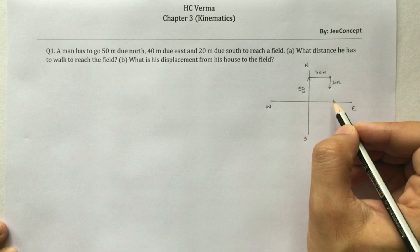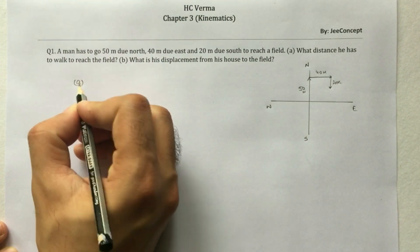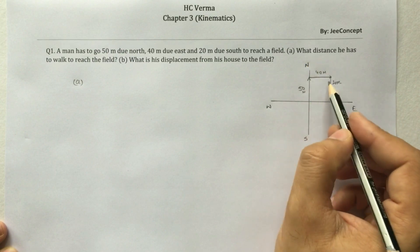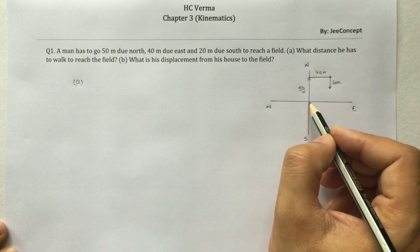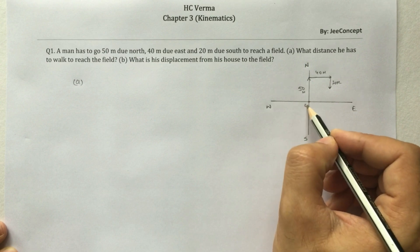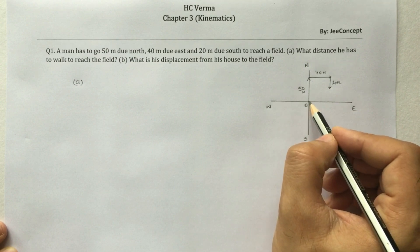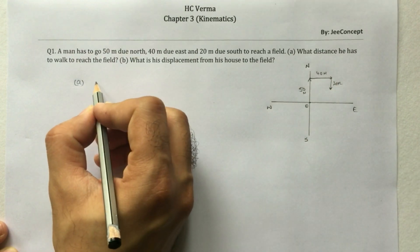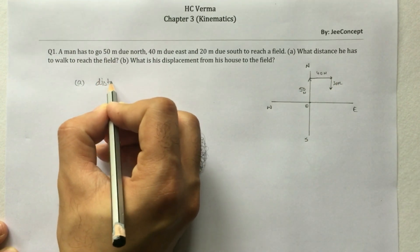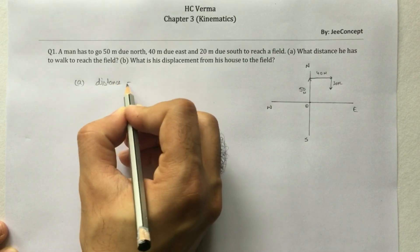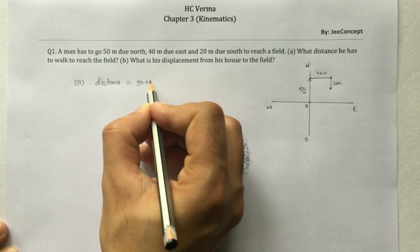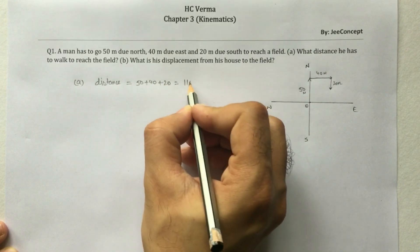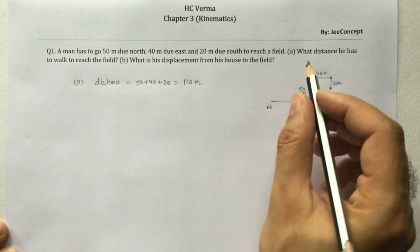In the first part, we simply calculate the distance he traveled to reach the field. This is the origin of that man. First he goes 50 meters, then 40 meters, then 20 meters. The total distance traveled is 50 + 40 + 20 = 110 meters. This is the answer for the first part.